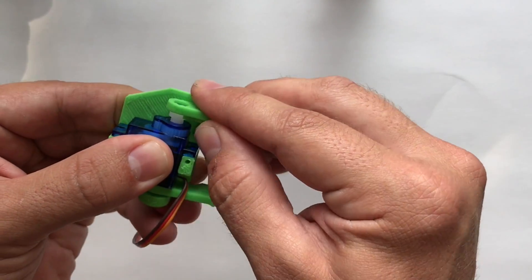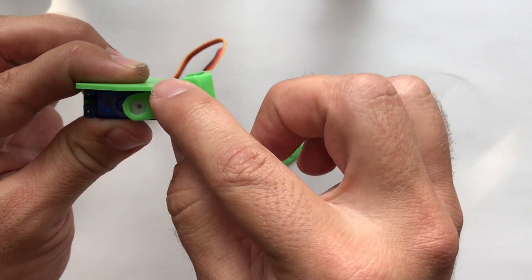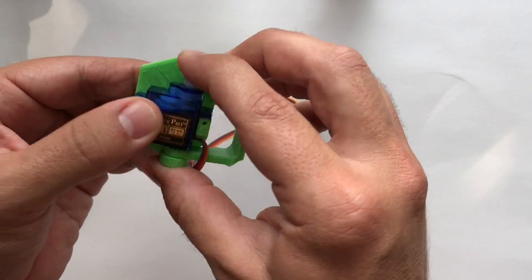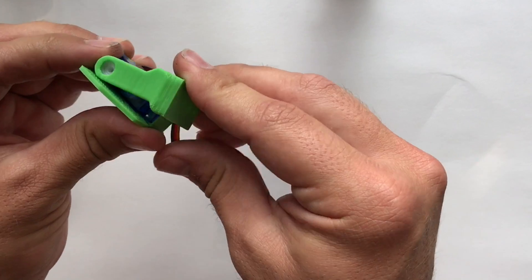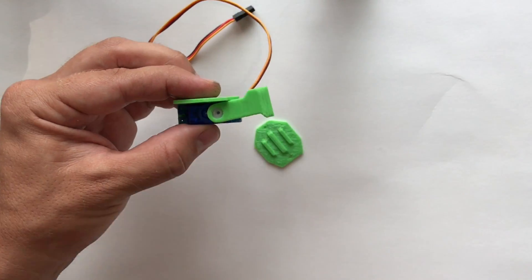I'm making sure the servo is all the way over, and then I snap it on when the arm touches the end. There it is attached. The next step is to put the screw into the horn.